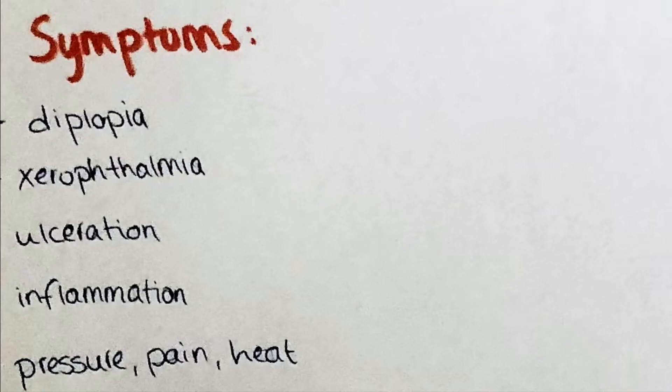Which symptoms do patients describe that are affected by protrusio bulbi? Usually they describe diplopia, which is more commonly known as double vision; xerophthalmia, which is the dryness of the cornea, which depending on the degree and severity can be accompanied by ulceration or inflammation of the cornea; as well as the sensation of pressure, pain, and heat.